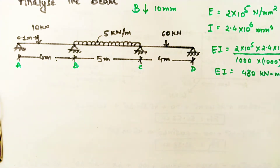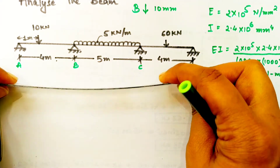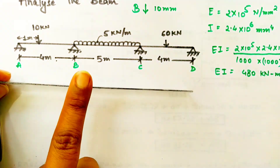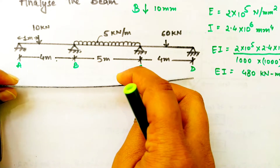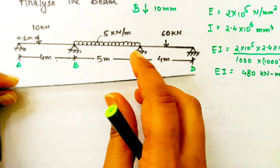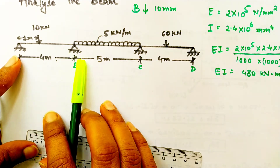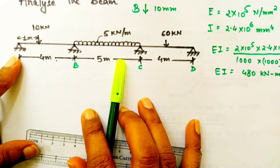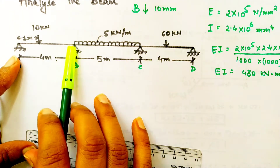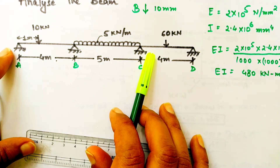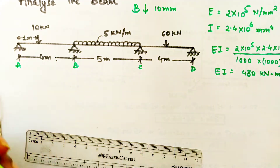Don't forget to write the units wherever you are finding a value. B is sinking down by 10 mm, so the effect of sinking of the support will be coming on to the AB and BC panel.